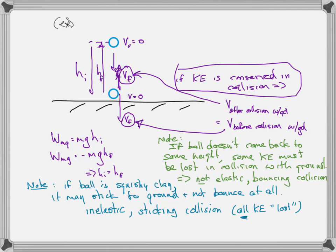A sticking or inelastic collision simply means that kinetic energy is not conserved. The primary difference you need to know: in an elastic collision, energy is conserved; in an inelastic collision, energy is not conserved. The kinds of collisions we've seen so far were all inelastic — when a car hits a moose and the moose lands on the windshield, that was an inelastic collision where kinetic energy had to have been lost.